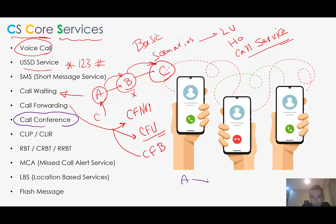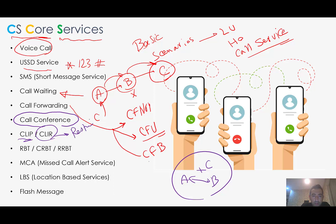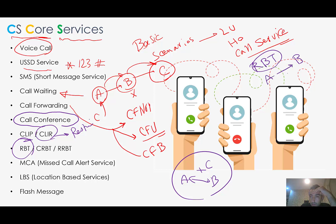CLIP means Caller ID Presentation, and CLIR is the opposite — a restriction service where we don't want the other party to see our number. We also have Ring Back Tone: when A calls B, instead of a simple ring, the caller hears a custom ring, for example a music track, that B has set.